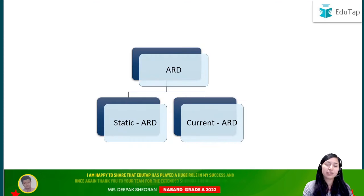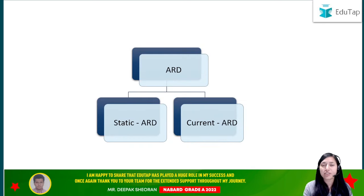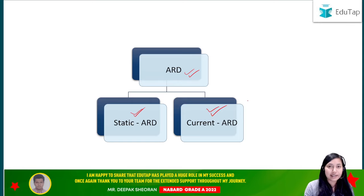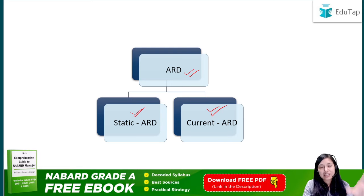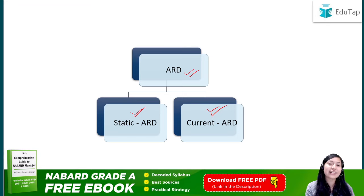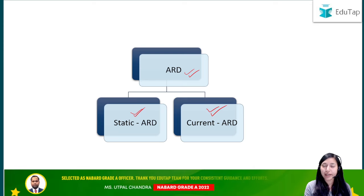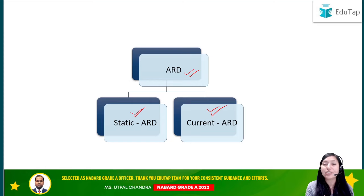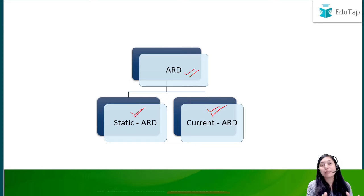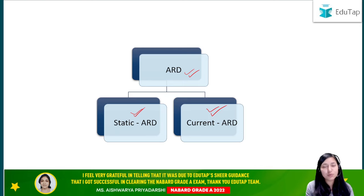Now let us talk about how to cover this ARD subject and from where to study it. Your ARD subject can be divided into static ARD and current ARD. Static ARD is that portion which is static in nature — it is not going to change easily. For example, soil properties and crop physiology are not going to change easily. All the conceptual parts and definitions that don't change easily in agriculture comprise your static ARD.